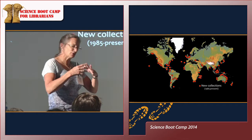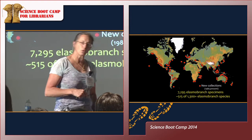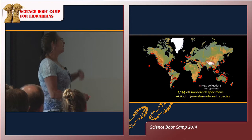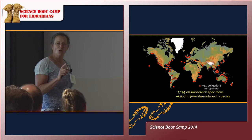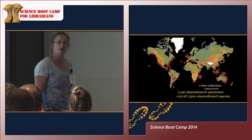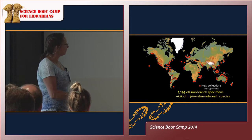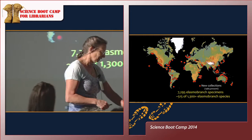We have a very standard protocol for collecting, and over the course of the last few decades we've collected tissue and specimens from 7,295 elasmobranch specimens — although I just got back from Ecuador, where interestingly we met more children named Darwin than any other place. Right now we have parasites from 515 of 1,300 of the world's elasmobranch species, give or take. So we're getting there.